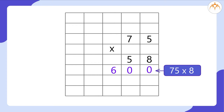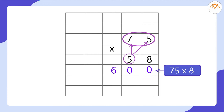Now we multiply 75 by 50, which means 5 multiplied by 50 plus 70 multiplied by 50, which is equal to 3,750. Have you noticed that the answer 3,750 has a 0 in its units place? This is because we have multiplied 75 by 50 — that is 5 times 10. So the answer is written from the tens place and 0 is written in the units place. Before we multiply 75 by 50, we write a 0 at the units place. Then we simply multiply 75 by 5.